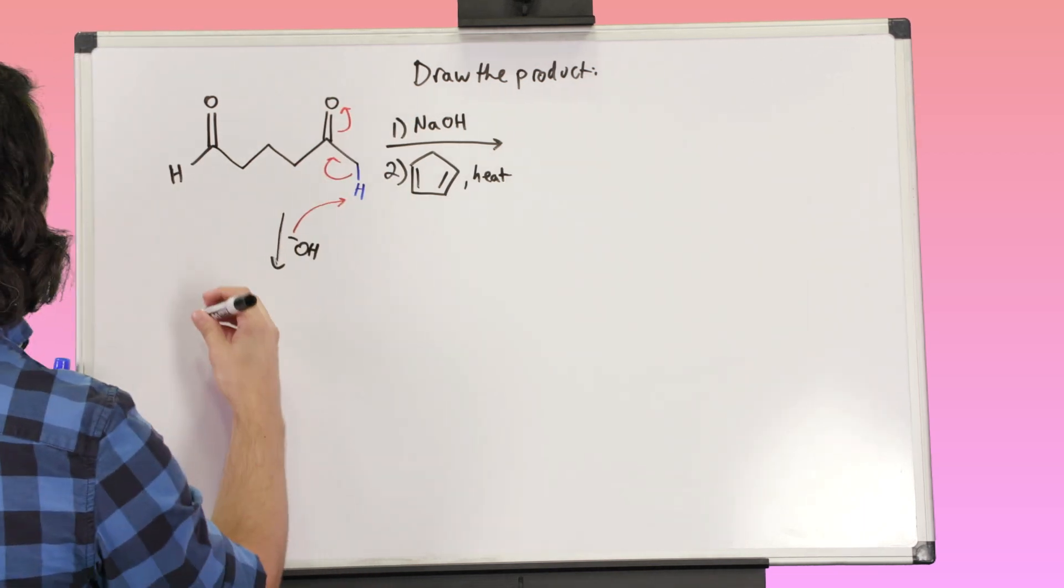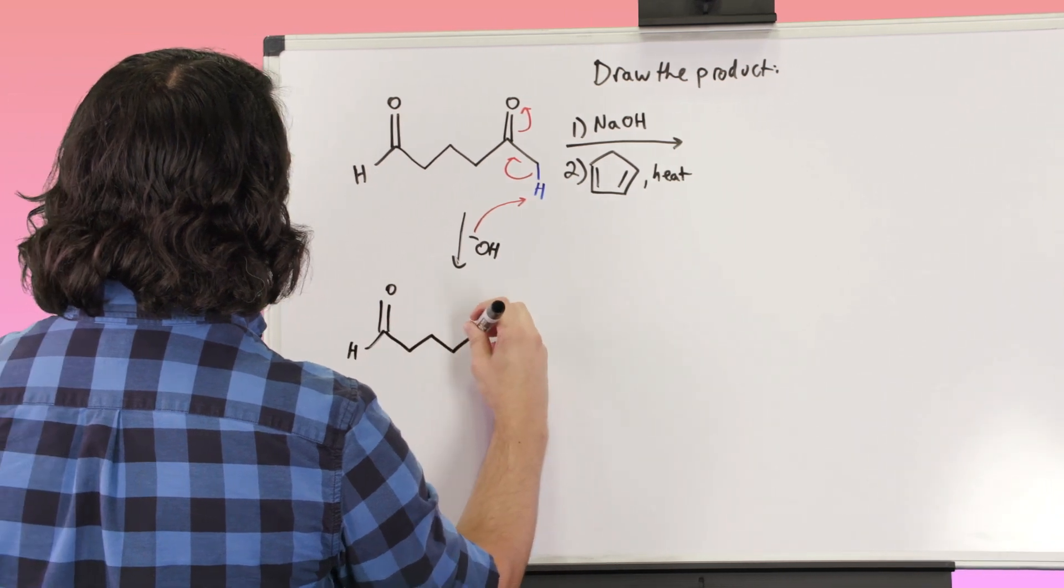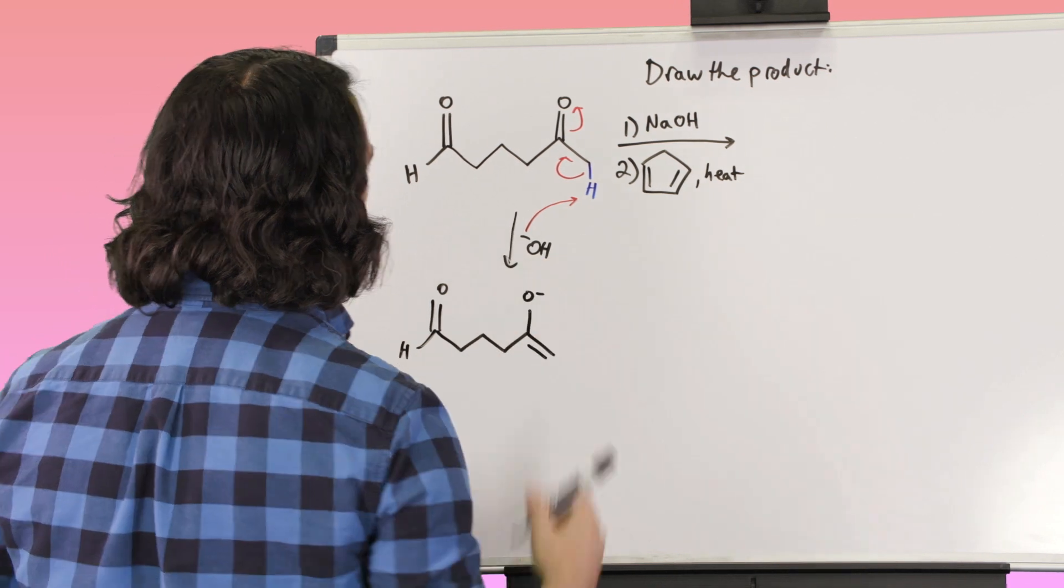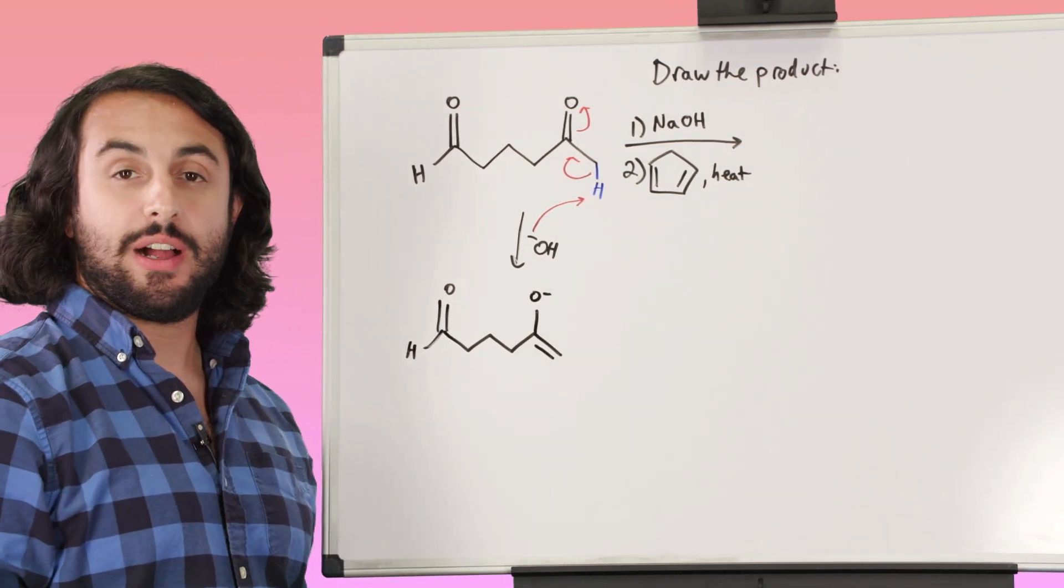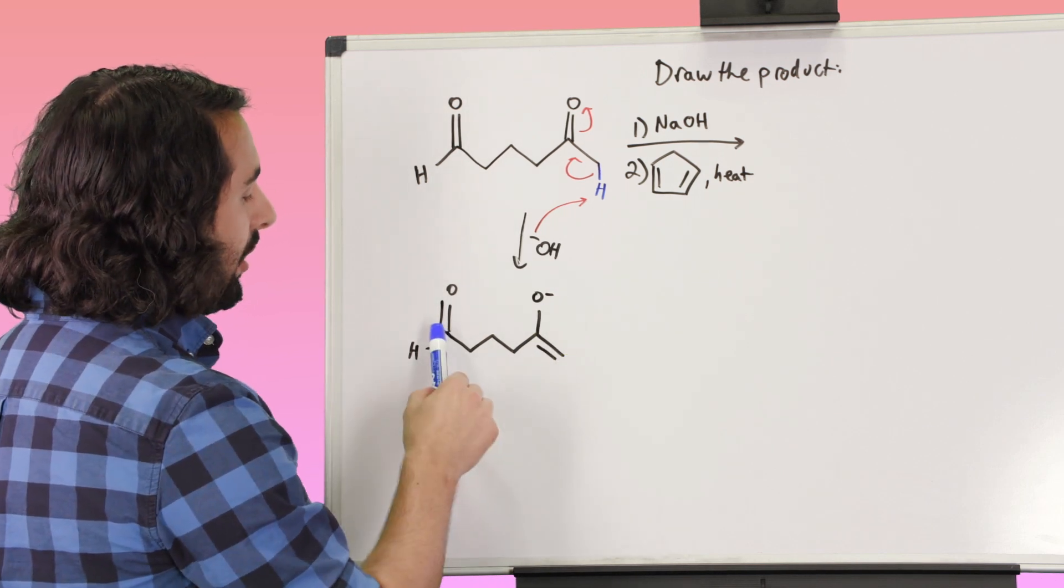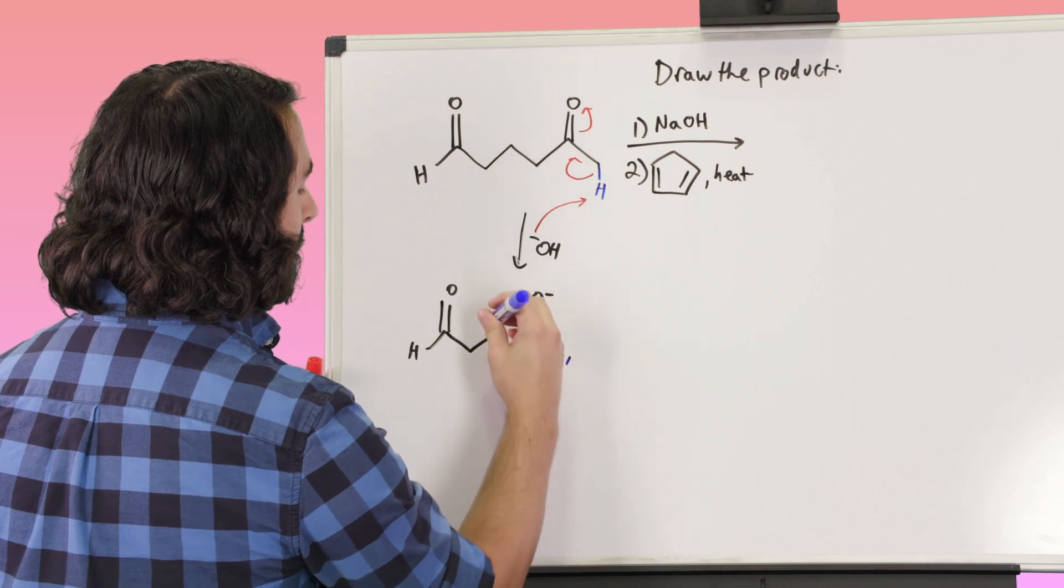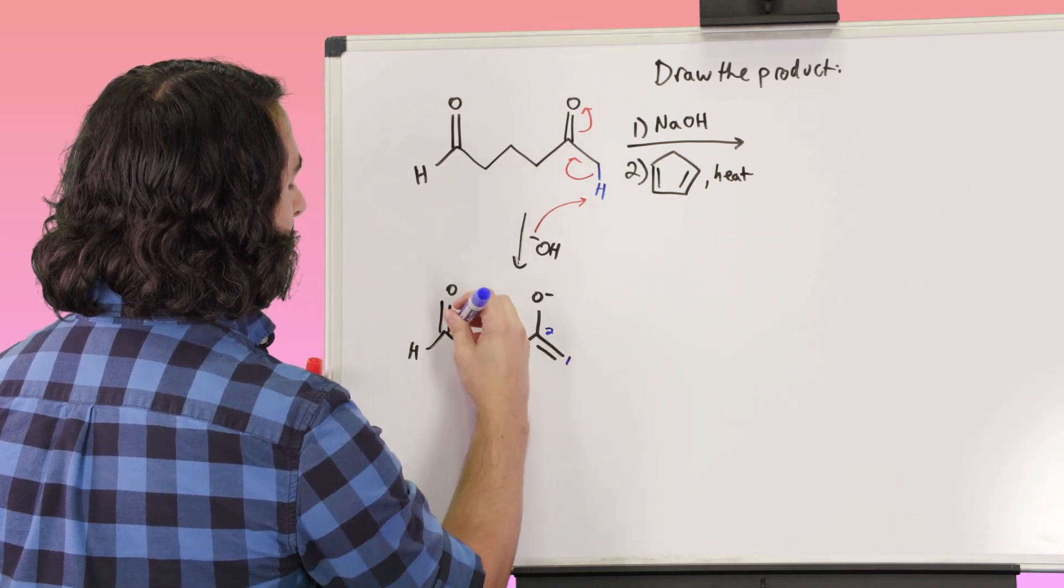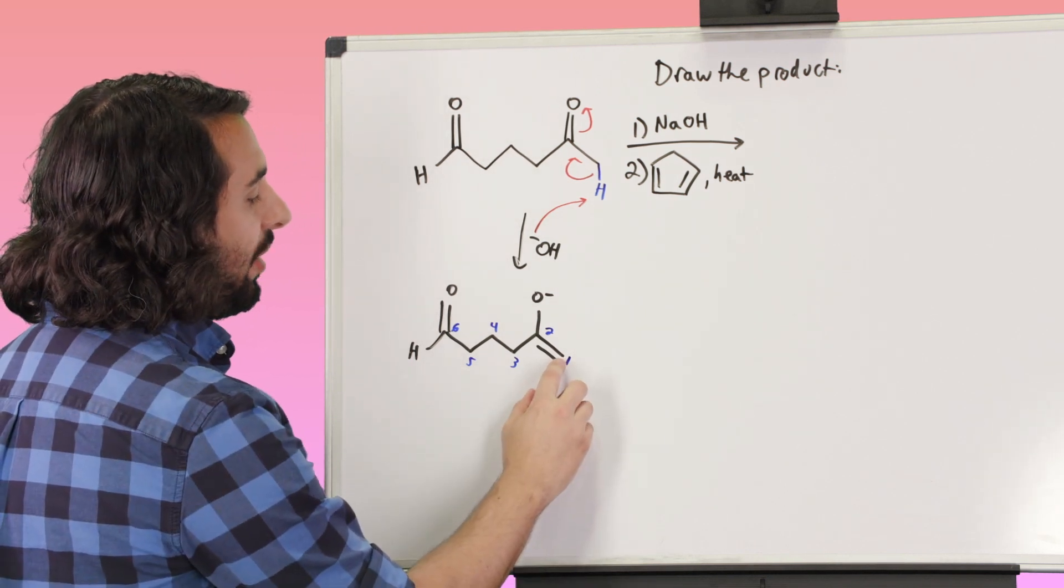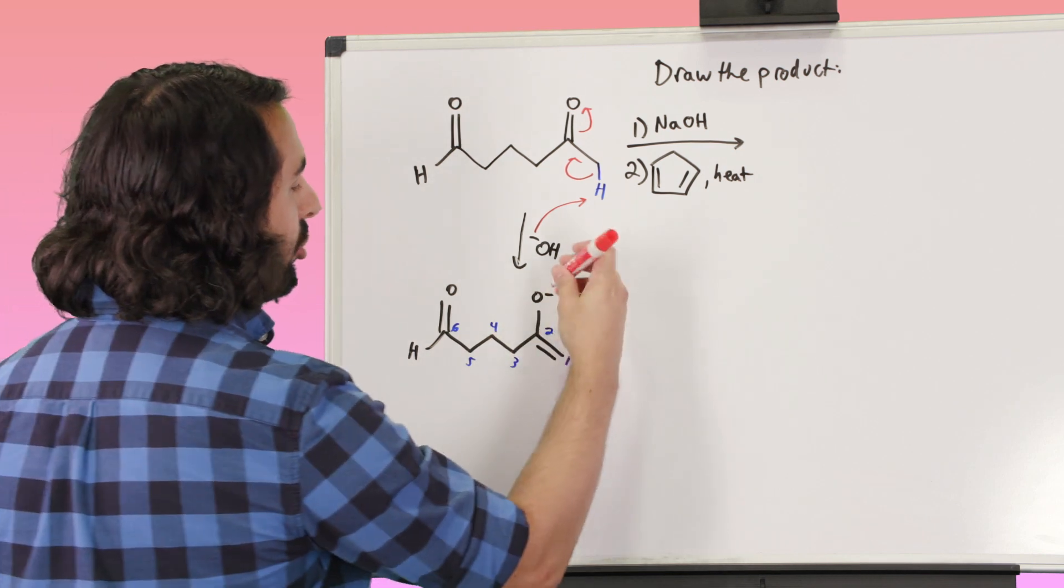So let's make our enolate. Now we're in a much better position here because we've got, this carbon is going to attack this carbon. And so this is a one, two, three, four, five, six membered ring that we're going to make. Because this carbon, the alpha carbon there is going to attack this carbonyl carbon. So let's show that happening.